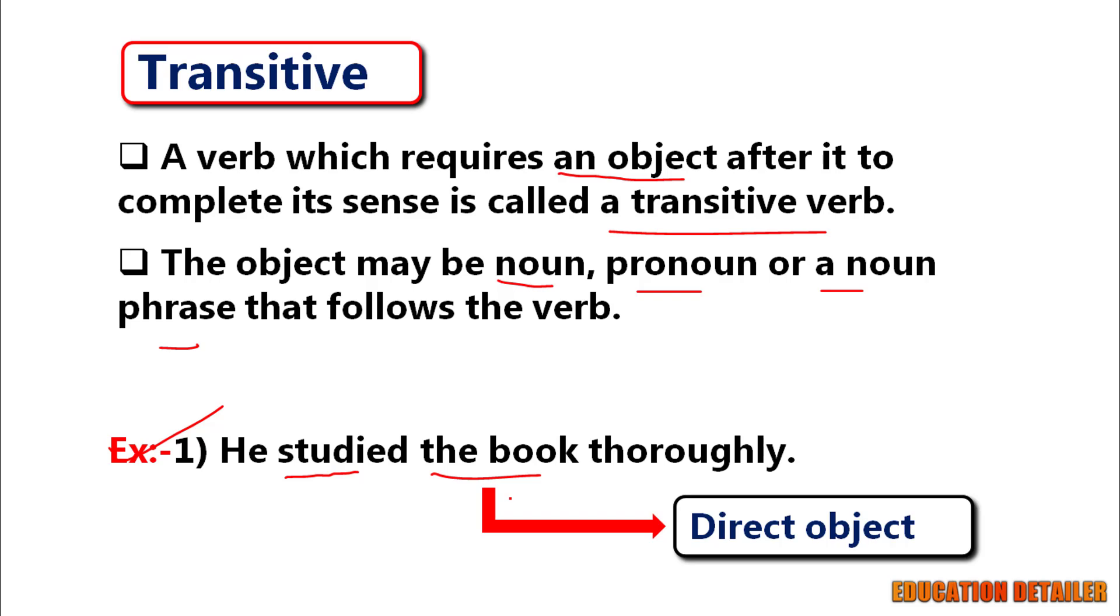Remember you can easily figure out a direct object by simply asking a question what or whom. In this example, you can ask: he studied what? The answer is the book.